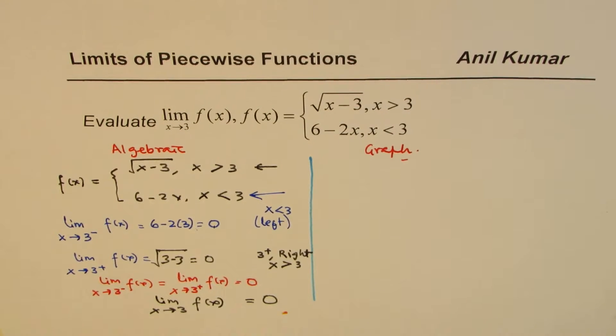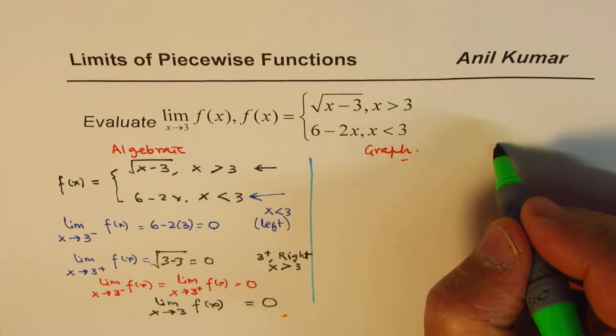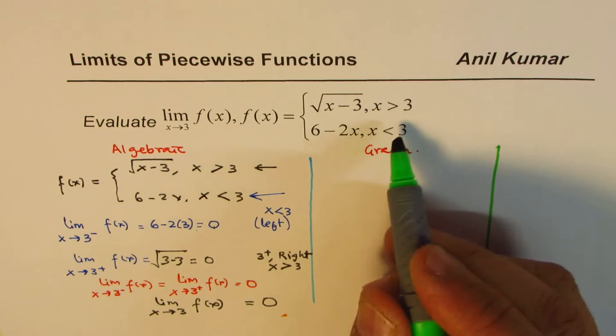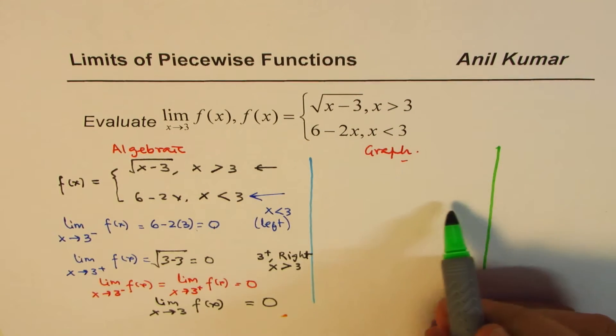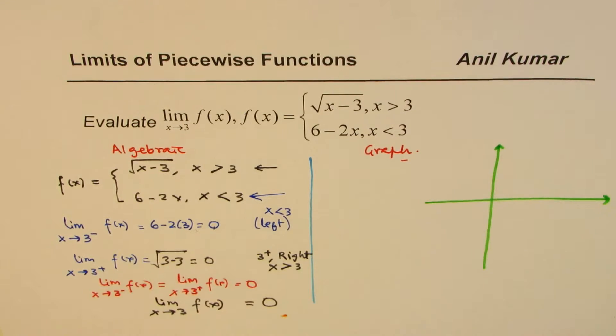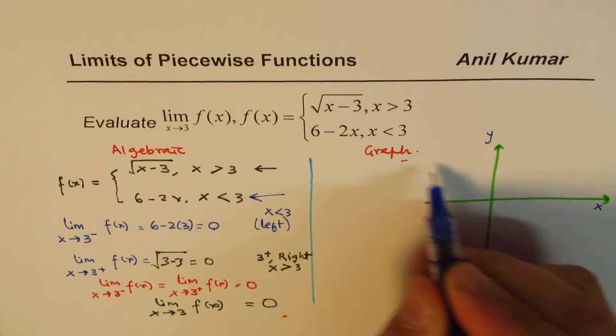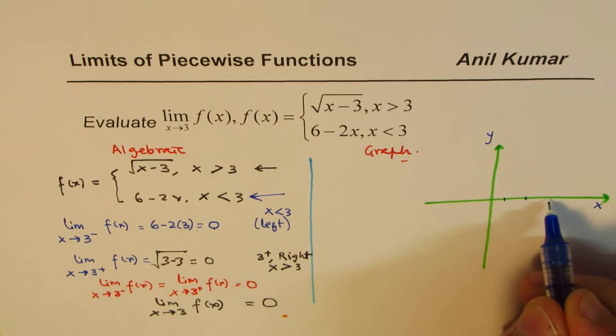Now let us see. You will also solve it by making a graph. So let's sketch a graph here. So we are talking about plus right side and left side of 3. So let's say this is x and y coordinates for us. 3. Let's say 1, 2, 3, 4. So this is 3 for us.